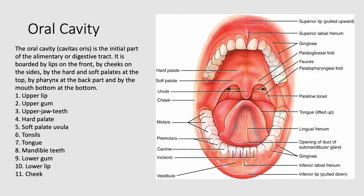We have the upper jaw and lower jaw teeth. Inside the oral cavity we have the hard palate, the soft palate along with the uvula, the tongue, the mandibular teeth, the lower lip, and the lower jaw. We will discuss the histology of the oral cavity in the further slides.